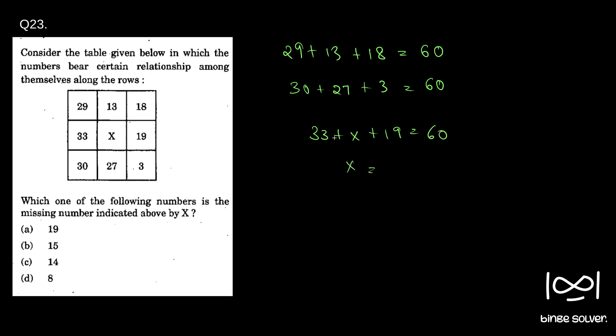So we get X as 33 plus 19 is 52. This is 60 minus 52, which is 8. So we get this X as 8, which is option D. So this is one solution, option D.